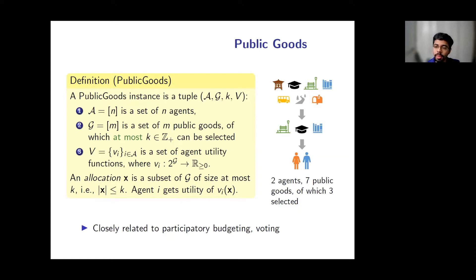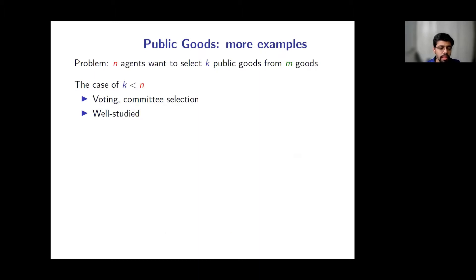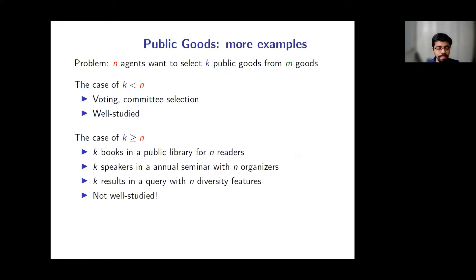The model also captures voting, where n agents want to select k candidates out of m possible candidates. The case of k less than n is well studied and captures problems like voting and committee selection. In contrast, the case of k being at least n is not well studied. For example, a public library buying k books for n agents, or a committee of n members deciding k speakers for a year-long seminar, will typically find that k is at least n.